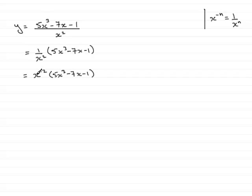Now, I can multiply x to the minus 2 with each of the terms in the bracket here. So, expanding that, remember just to add the powers, we get 5x to the power 1 or just simply 5x and then minus 7x to the power minus 1 and then minus x to the power minus 2.